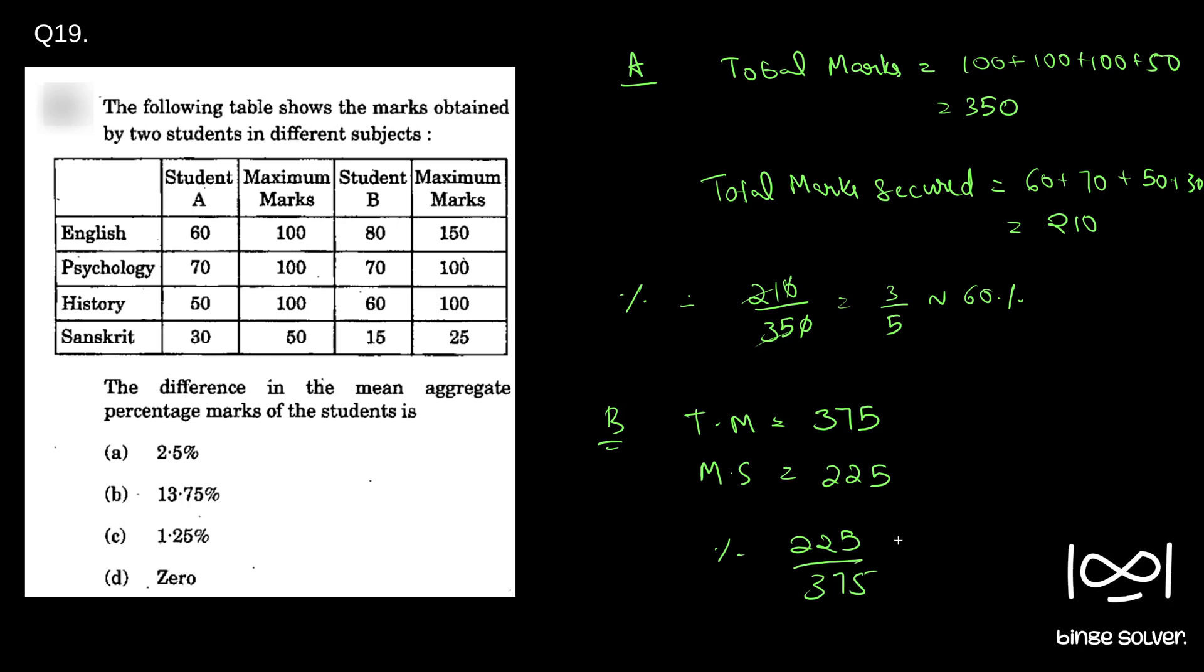So if you cancel with 5, you get 45 by 75. So which is, again, if you cancel it with 15, we get 3 and this becomes 5. So it is 3 by 5, which is also 60 percentage.